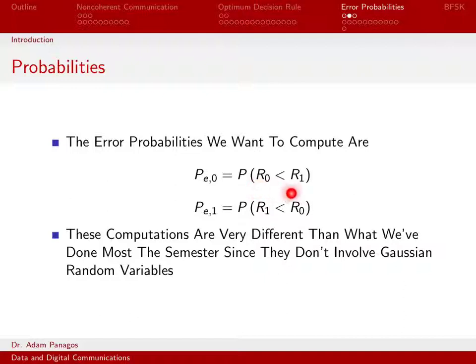These are now Rayleigh random variables. So the math we're going to do to actually evaluate this probability is going to look very different from the Gaussian random variable calculations we've tended to do in this class.